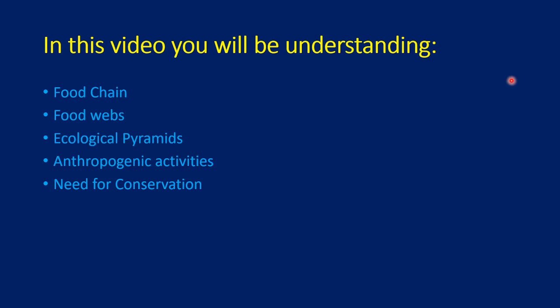In this video we looked at what the food chain is, the significance of food webs, the different varieties of food webs, ecological pyramids, and anthropogenic activities — the effect of human activities on nature — and why we need to conserve nature and the methods by which we can do so. I hope it was useful to you. Thank you.